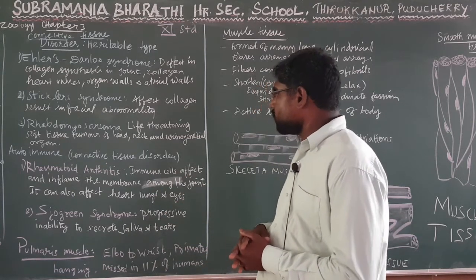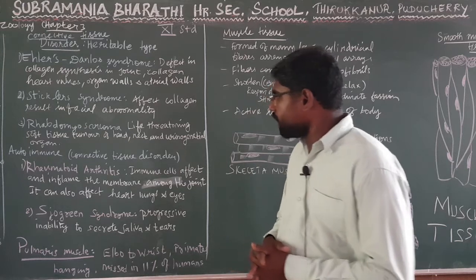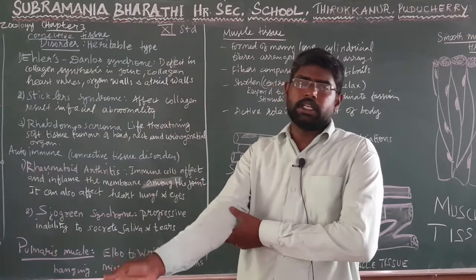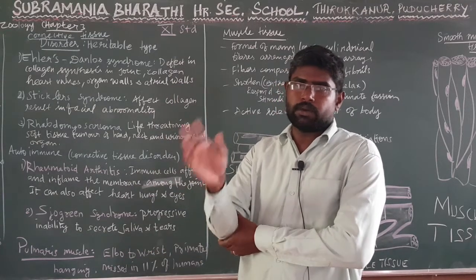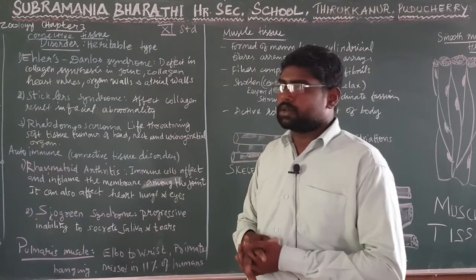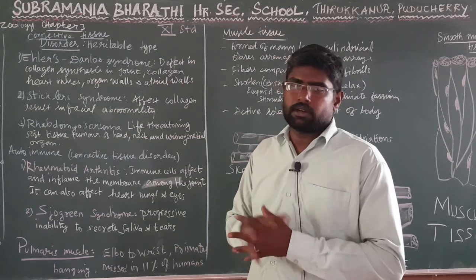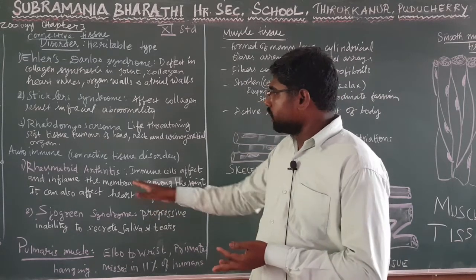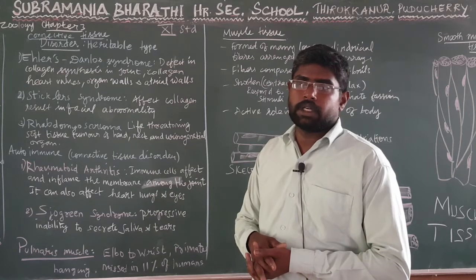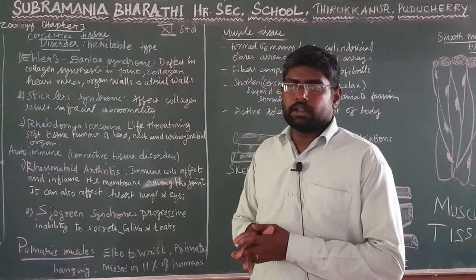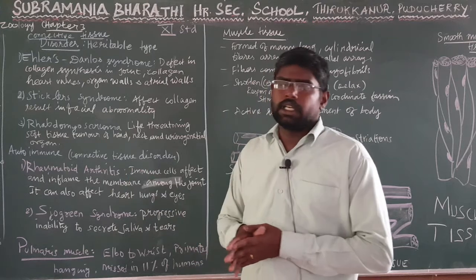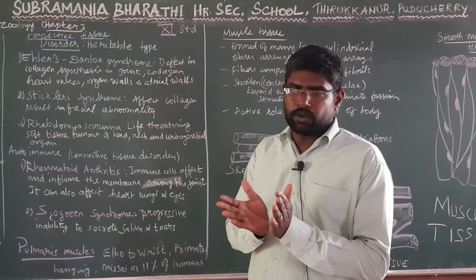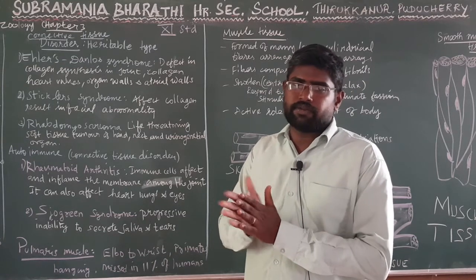In rheumatoid arthritis, immune cells affect and inflame the membrane among the joint — the synovial joint, also called the movable joint. The synovial joint has a membrane layer that acts like a layer of grease.